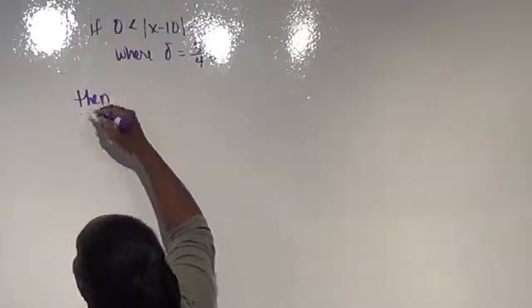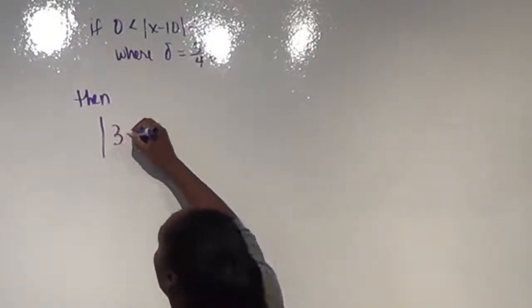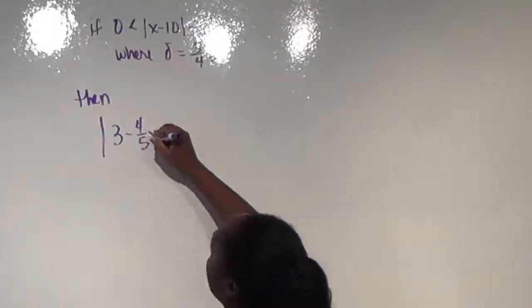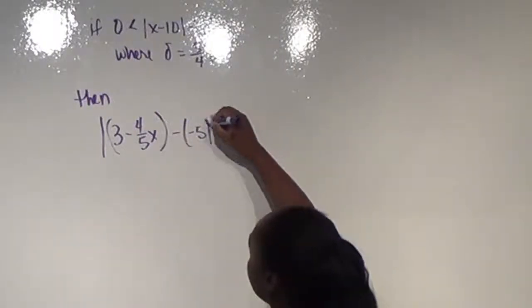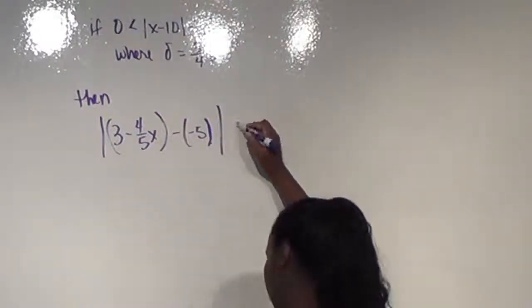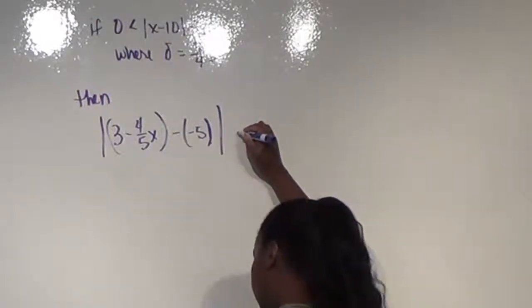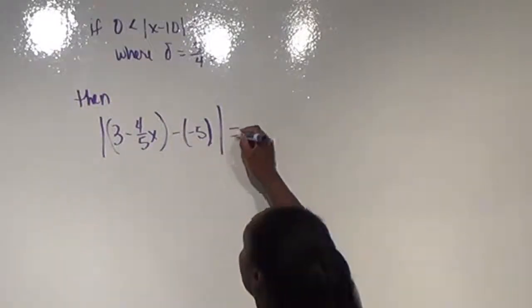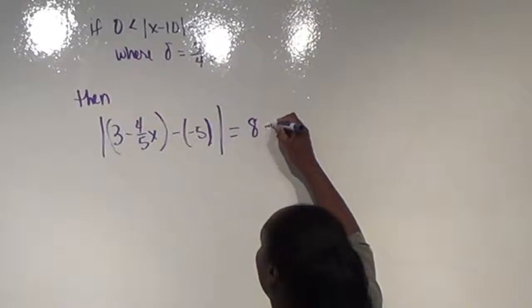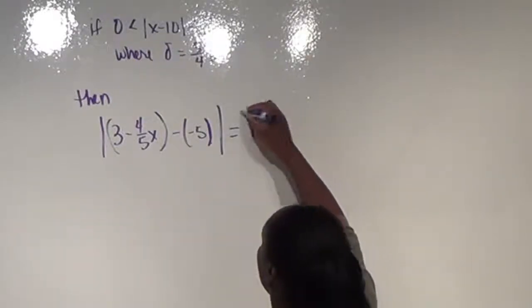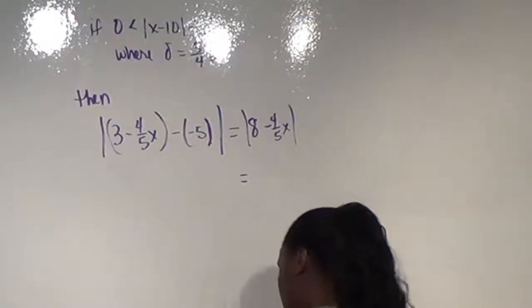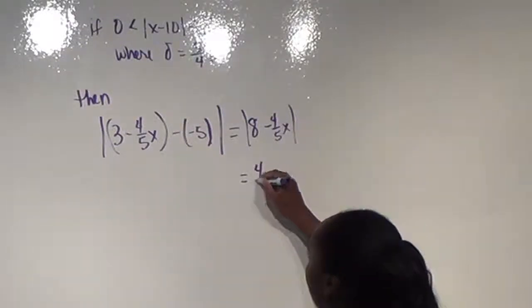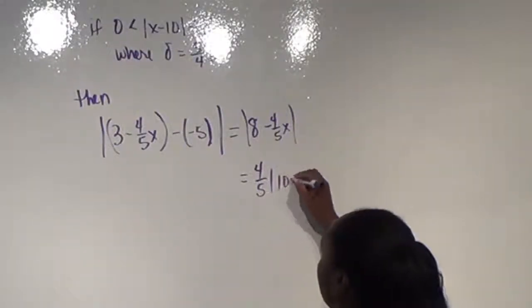then we get that |3 - 4/5 x - (-5)|, in absolute value, which we know from what we did there is |8 - 4/5 x|, which is equal to 4/5 |10 - x|,